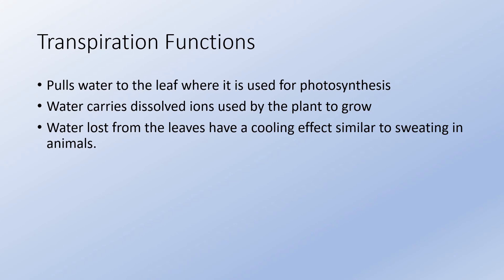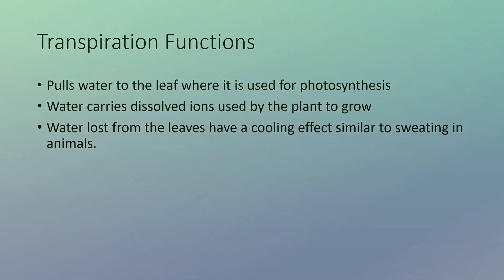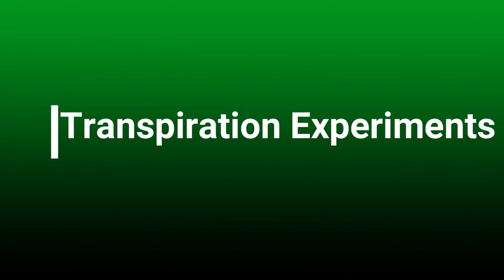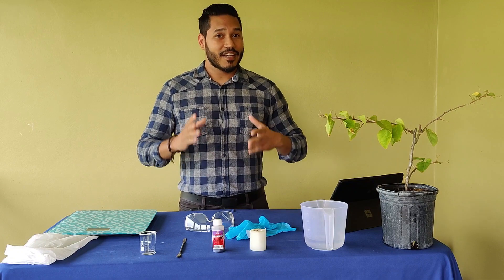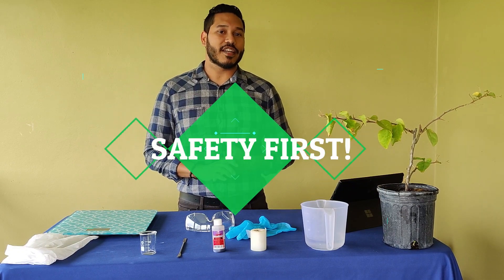The loss of water from leaves also takes heat with it, so it has a cooling effect on the leaves, which can get very warm being in direct sunlight for long periods of time. Now let's look at demonstrating transpiration in plants. Before we get started, it's always a good idea to follow safety protocols whenever doing an experiment.